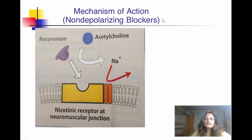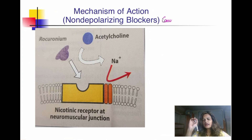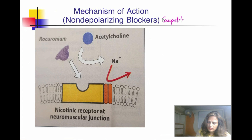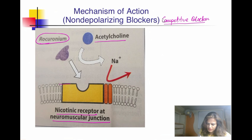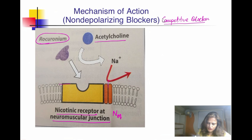Now, the mechanism of action of non-depolarizing or competitive blockers — this includes all long, intermediate, and short-acting agents. Taking rocuronium as an example: it competes with acetylcholine for binding to the NM receptor, which is a nicotinic ion-channel-linked receptor with sodium involvement. Rocuronium comes and binds at the alpha subunit sites where acetylcholine normally binds, preventing acetylcholine from binding.